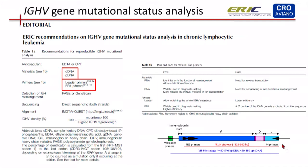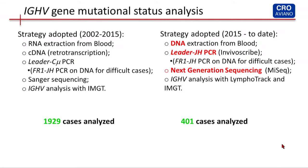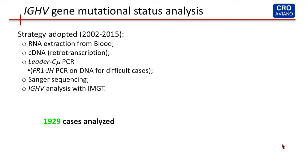From 2002 to 2015, in our lab we sequenced almost 2,000 cases of CLL using this strategy. We performed the RNA extraction from blood, retro-transcribed the RNA into cDNA, and used a PCR based on the leader strategy in junction with a CMu primer, or for difficult cases, an FR1-JH PCR strategy, followed by Sanger sequencing. We analyzed the sequences against the IMGT database.